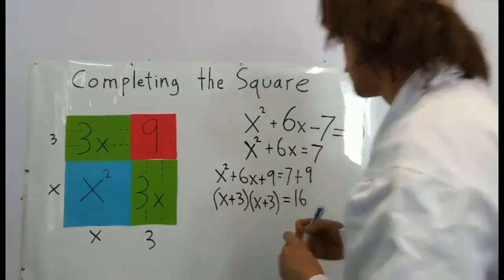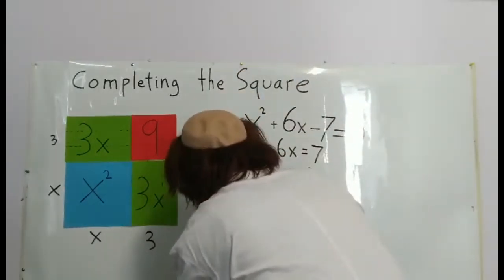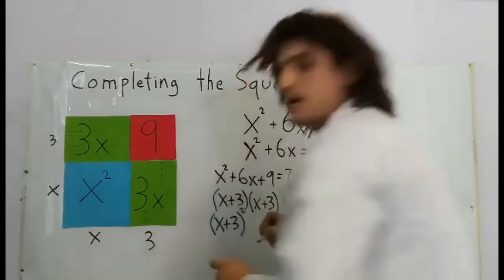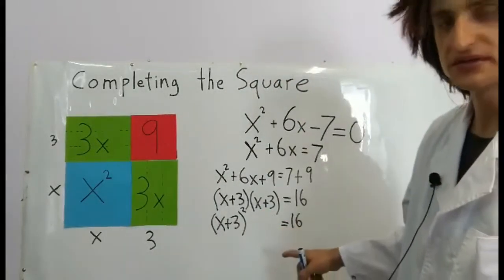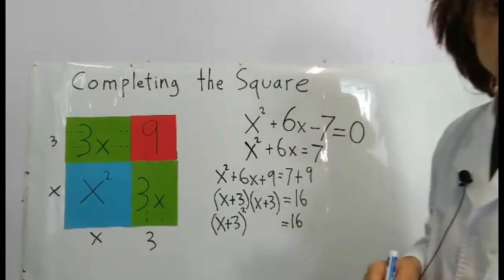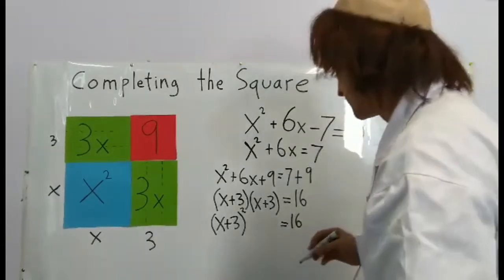We can take the square root of both sides. The square root of (x + 3)² is x + 3.